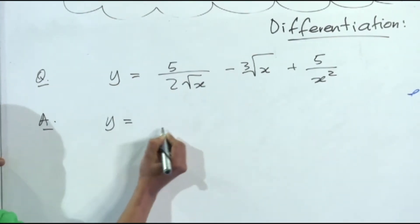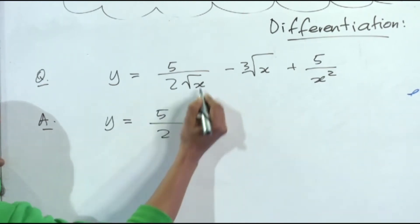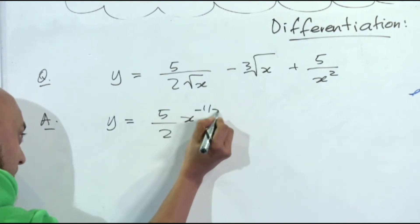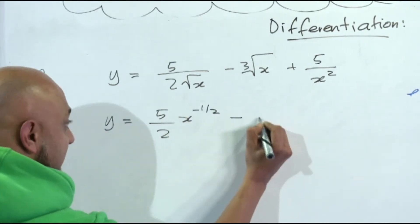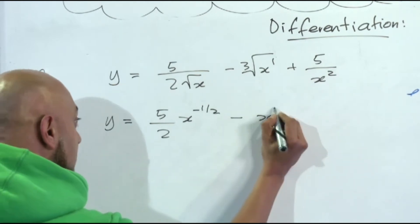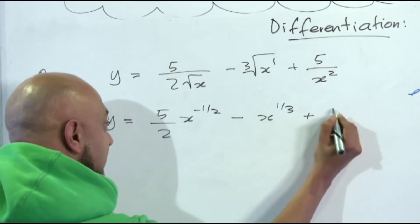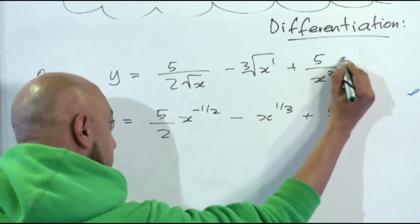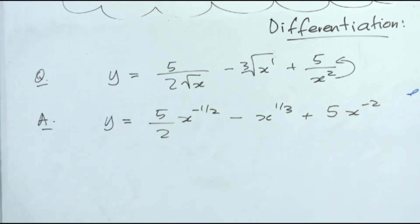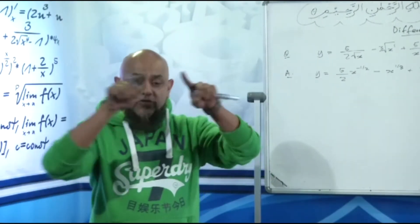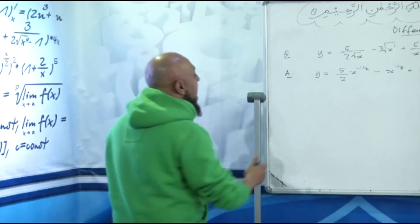y is equal to, we got 5 over 2, this is x to the power half. So x to the power half will come up to the top as x to the power negative half, minus x to the power 1 over 3, plus 5 x to the power plus 2 will come up to the top as x to the power minus 2. There we go, in one step we've brought it all linear.